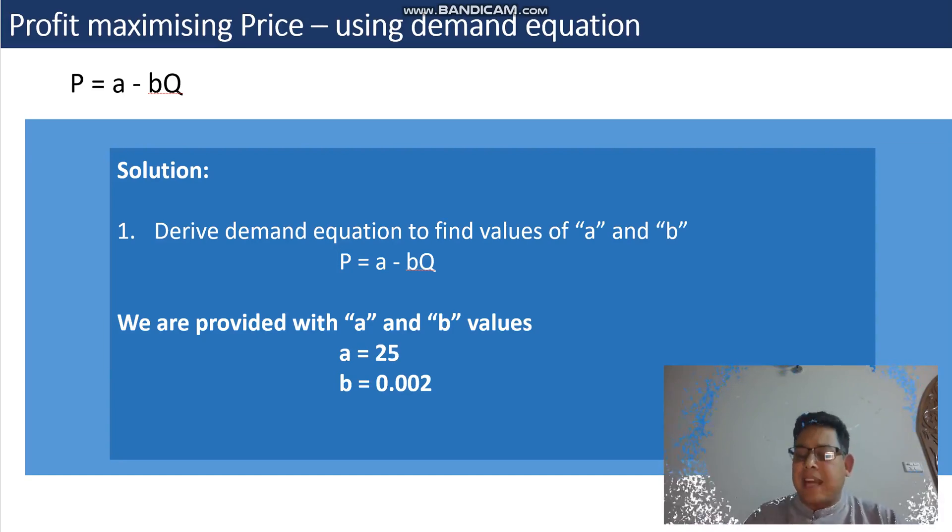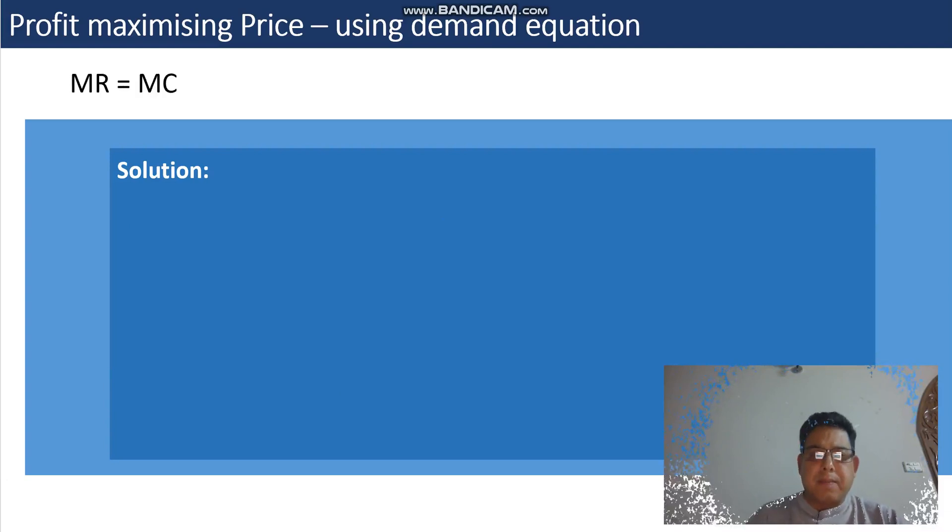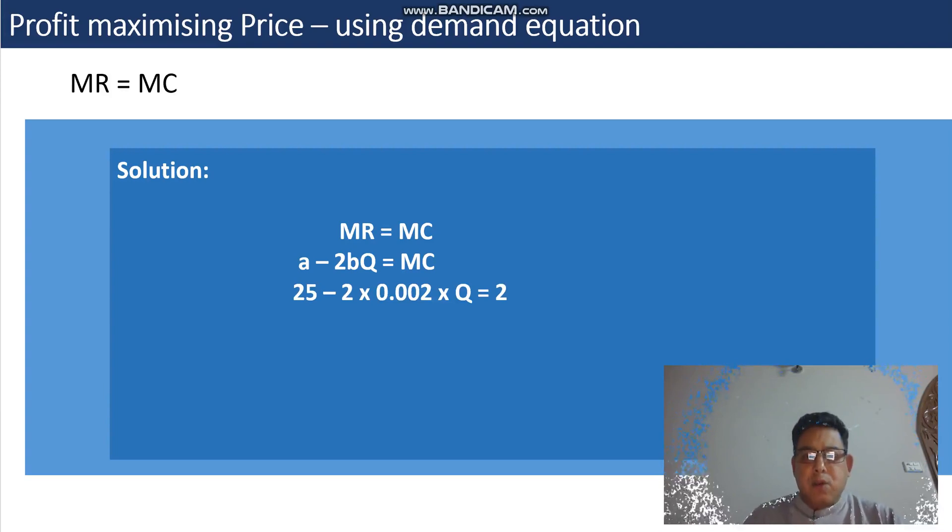Here we go: MR = MC, that's the second step - equate marginal revenue and marginal cost. Marginal revenue is defined as a - 2bQ and marginal cost is marginal cost. So if we just substitute the numbers into this, bang the numbers into the equations.